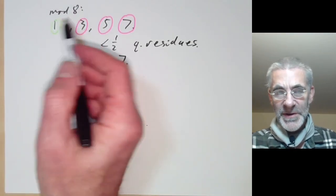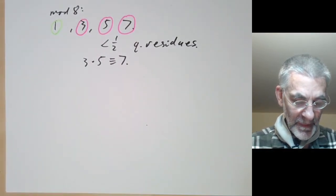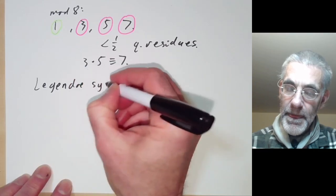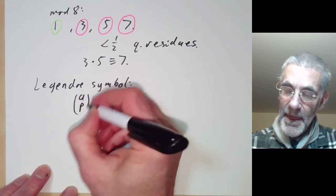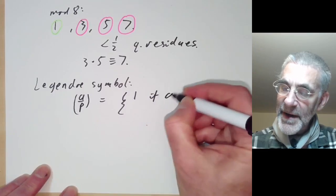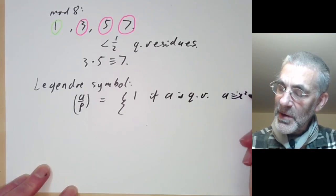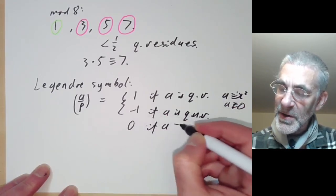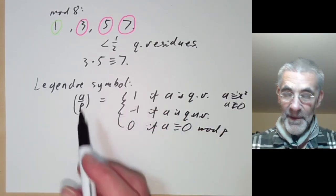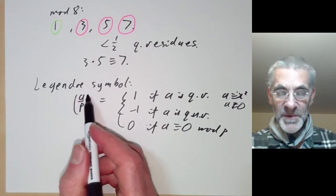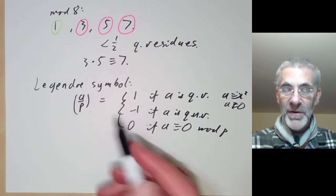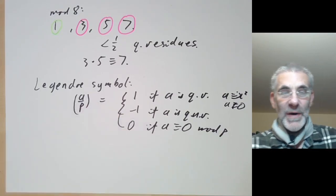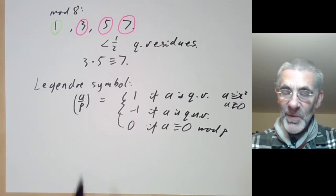This is because 8 doesn't actually have a primitive root. There's a common notation for this called the Legendre symbol. The Legendre symbol (a/p) is defined to be 1 if a is a quadratic residue (meaning a ≡ x² mod p and a ≢ 0), minus 1 if a is a quadratic non-residue, and 0 if a is congruent to zero modulo p. Mathematicians overuse parentheses, and the Legendre symbol is another example, but it's the traditional notation. All the results about products of residues and non-residues can be written as (ab/p) = (a/p)(b/p).